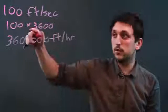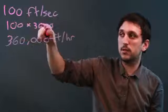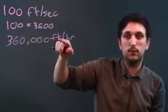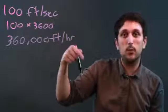Now, if you want to do this in two steps, you multiply by 60, which would give you 6,000. Multiply by 60 again, which would give you 360,000 feet per hour. But now we still have feet and we want miles.